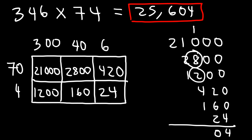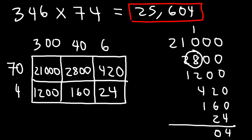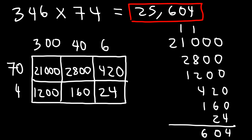Adding the six numbers: 2 plus 10 is 12, plus 1 is 13 — wait, continuing the column addition: plus 4 is 15, plus 1 is 16 — write the 6, carry the 1. Then 1 plus 1 is 2, plus 2 is 4, plus 1 is 5. Bring down the 2. And so we get the same answer of 25,604.